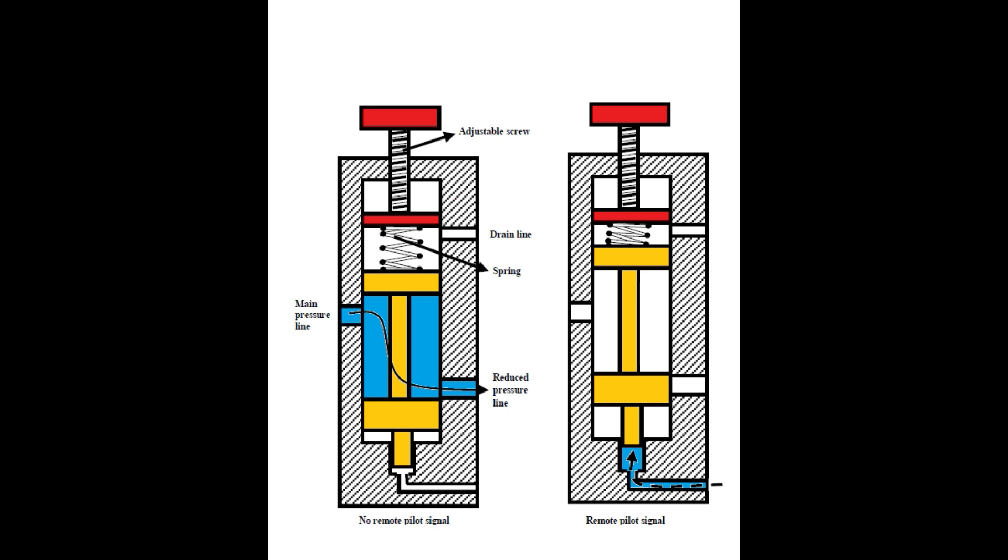Instead of sending flow back to the tank, a sequencing valve allows flow to a branch circuit when a preset pressure is reached.